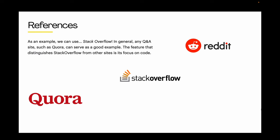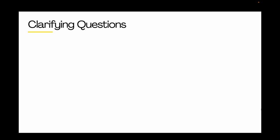Let's start with the references. As an example, we can use Stack Overflow. Generally, any questions and answers sites such as Quora can serve as a good example. What distinguishes Stack Overflow from other sites is its focus on code. Before we begin, we need to gather more information about the application.